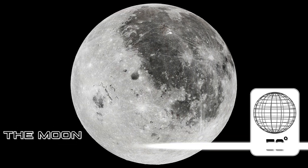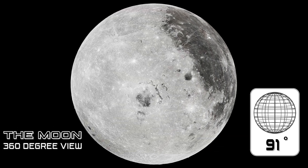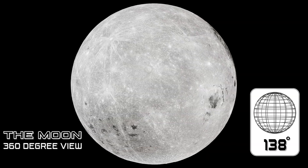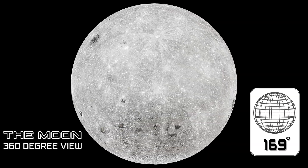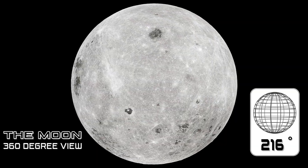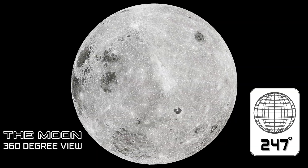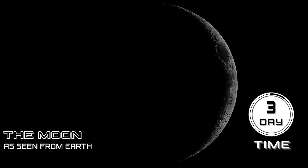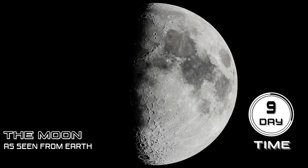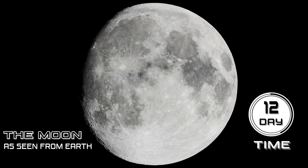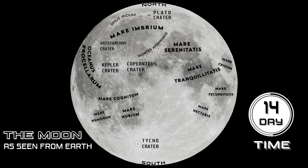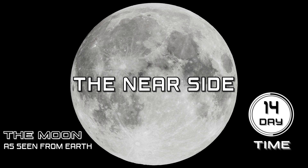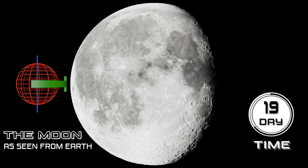This is a rotating view of the Moon, and this is the Moon as seen from Earth. Do you see the difference? From Earth, we always see the same side of the Moon, which is called the near side. And this gives the impression that it isn't spinning on its axis.